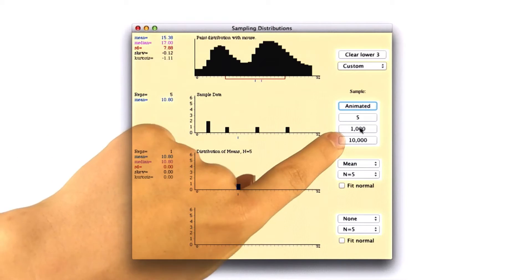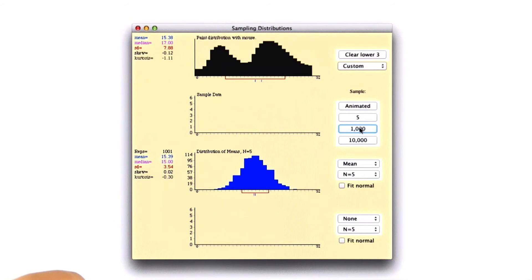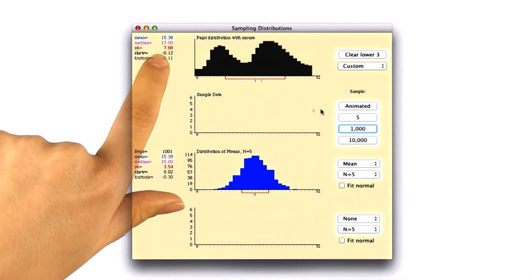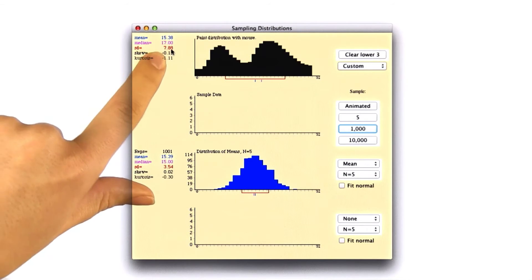Let's do that same thing 1,000 times. So here's the distribution of sample means. And you can even calculate the standard deviation of this distribution, because here we have the population parameters.